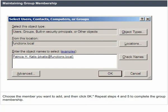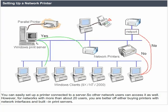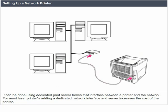Setting up a network printer. You can easily set up a printer connected to a server so other network users can access it as well. However, for networks with more than 20 users, you are better off either buying printers with network interfaces and built-in print servers, or using dedicated print server boxes that interface between a printer and the network. For most laser printers, adding a dedicated network interface and server increases the cost of the printer.